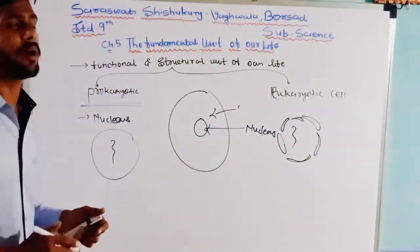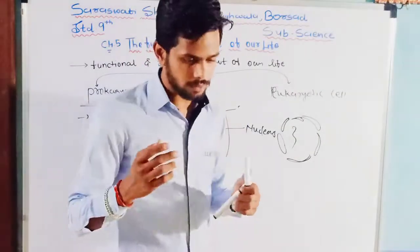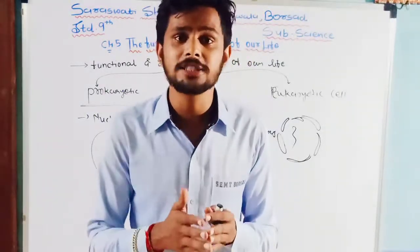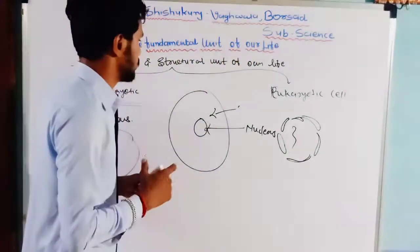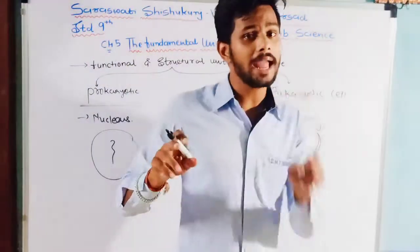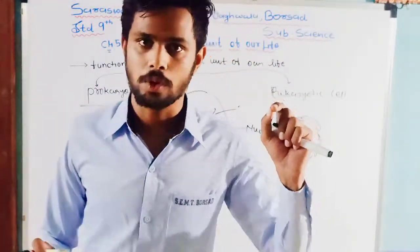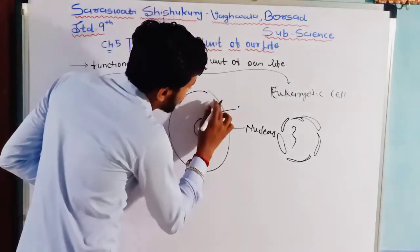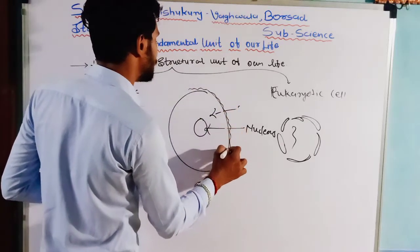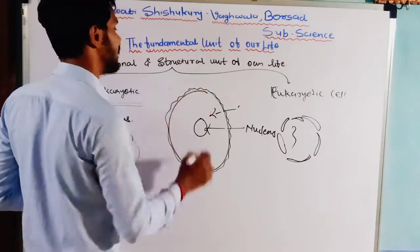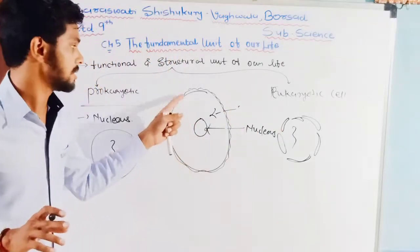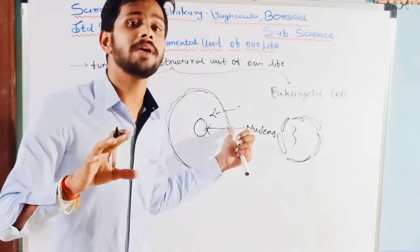Now let's talk about some cell organelles. The first cell organelle is the endoplasmic reticulum. But first, let me recall the cell wall. The cell wall is only present in the plant cell. The plasma membrane is covered by another membrane, known as the cell wall, which exists only in plant cells.